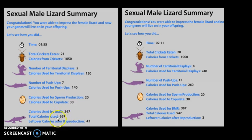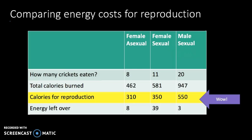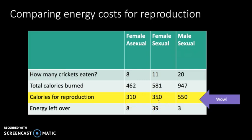When we go to the male, you can see there are more calories. The male used 947 calories because he needed to do more territorial displays and more push-ups — this guy must not have been quite as impressive as the other guy. You can see the male ate 20 crickets versus the females with 8, 8, and 11. So being a male lizard and trying to sexually reproduce — which is your only choice if you're a male — is a pretty tough option.